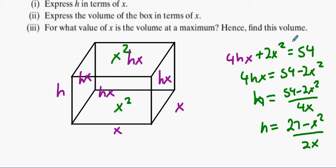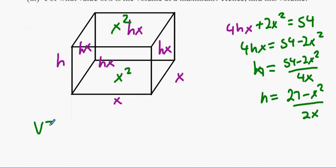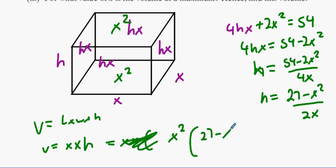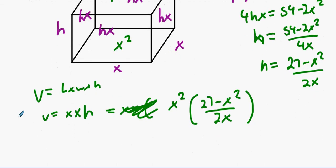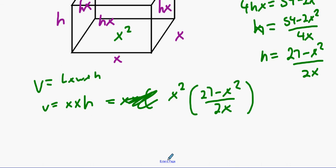I just work out the individual area of each side and add them all together, that's the same thing. Now you gotta find the volume. So how do you find the volume, Varma? What's the volume? Length by width by height, which is x times x times h. But we don't want h, so it's going to be x squared times 27 minus x squared all over... And then what you do after that?